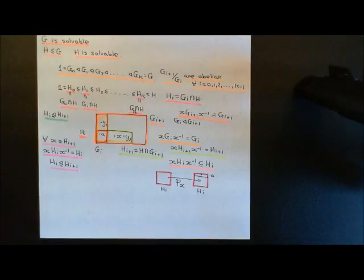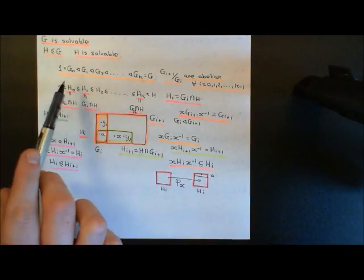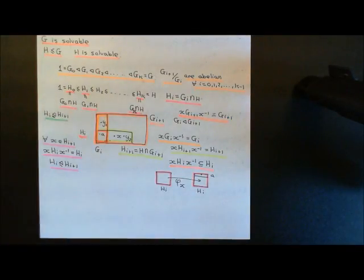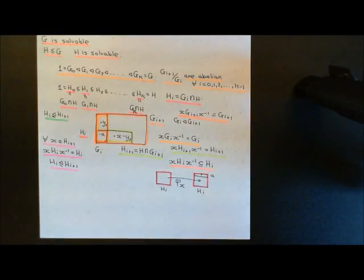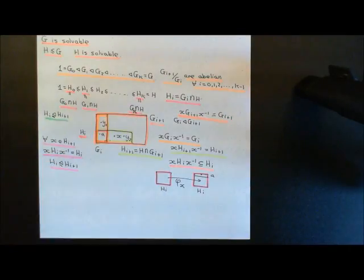The way we've done this is we took the subnormal series where all of the quotient groups were abelian for G, and we used this to construct what we've shown now is a subnormal series for our subgroup capital H. Basically all we did is we took all of the subgroups involved in the subnormal series for G and intersected them with H to get a subnormal series for capital H.